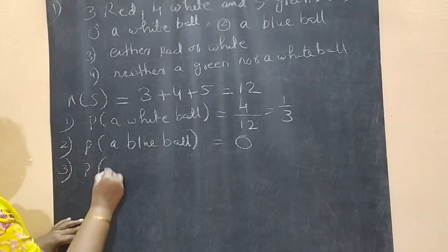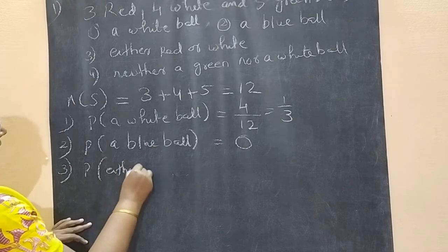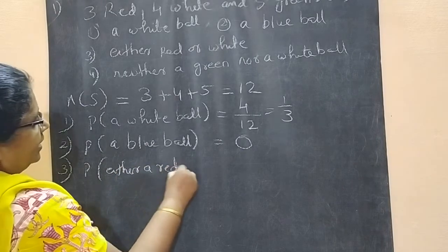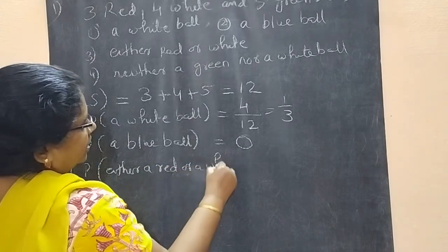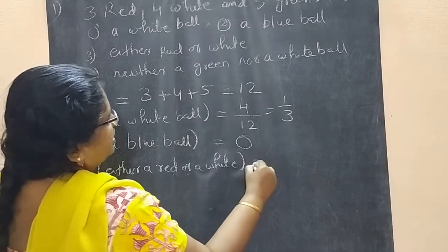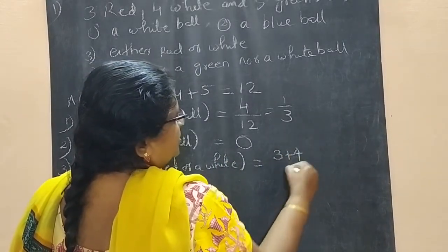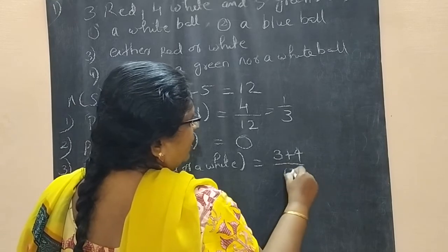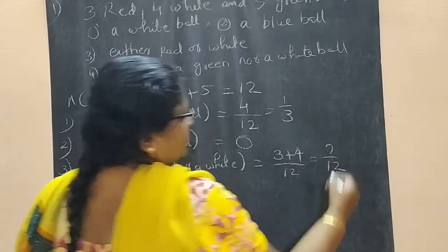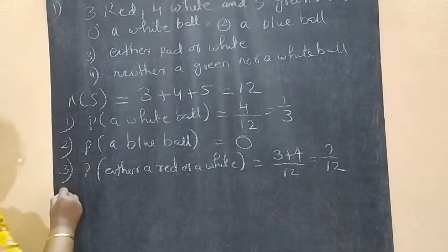So probability of getting either a red or a white means red is 3, white is 4. So 3 plus 4 by 12, that is 7 by 12.